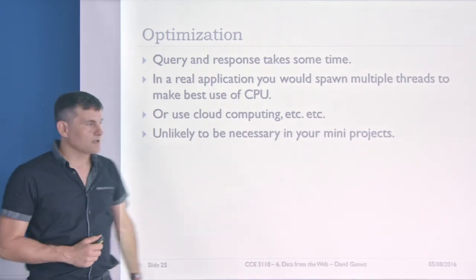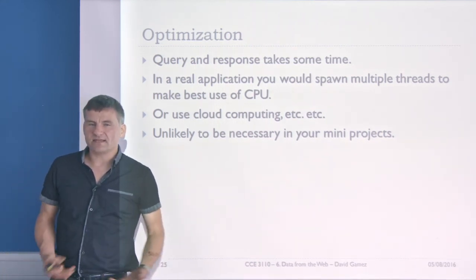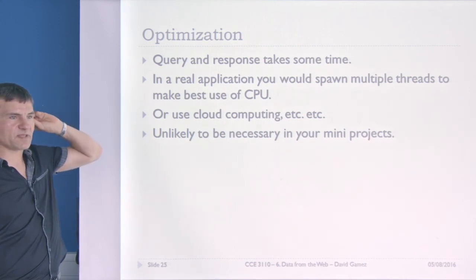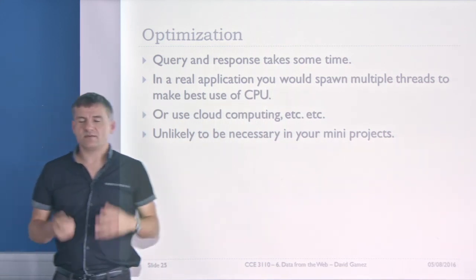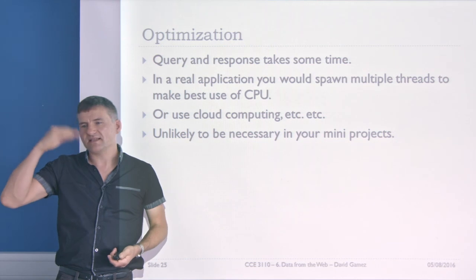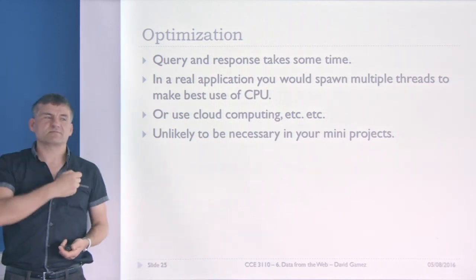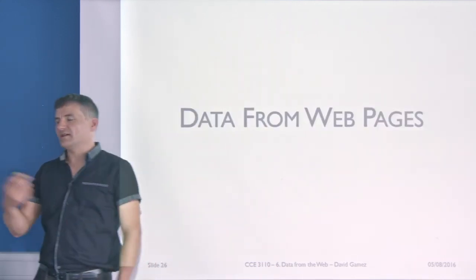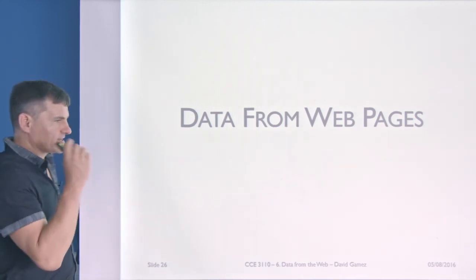For a commercial-scale website like Google, you'd have a complicated architecture with lots of threads, servers, and enormous distributed databases. For your mini projects, forget all that. All I'm expecting is one program that downloads the third-party data and saves it to the cloud, and another program — like the servlets program from the previous lecture — that pulls data from the cloud and displays it in the web page. We're not downloading petabytes of data — it's a mini project.